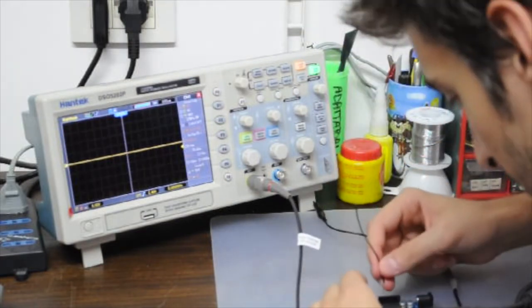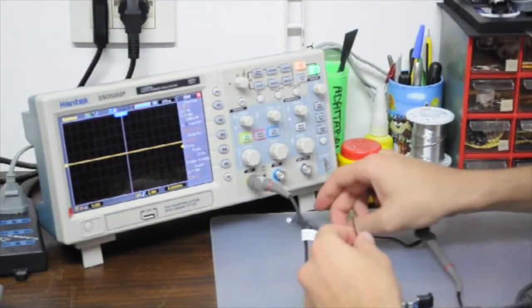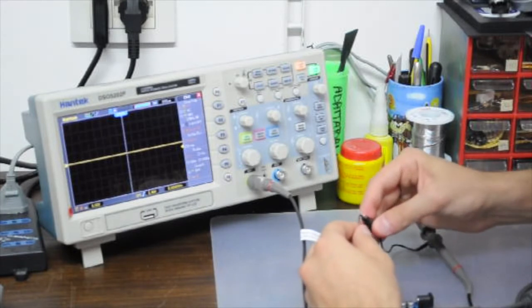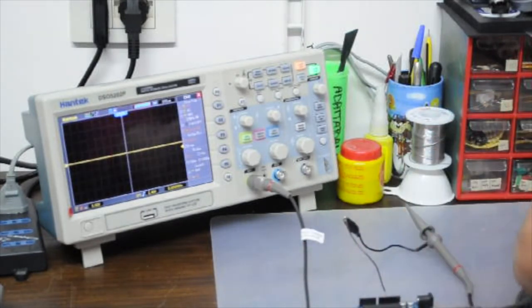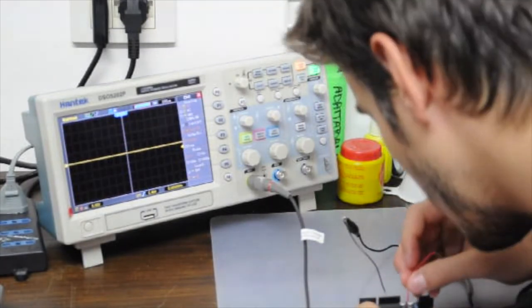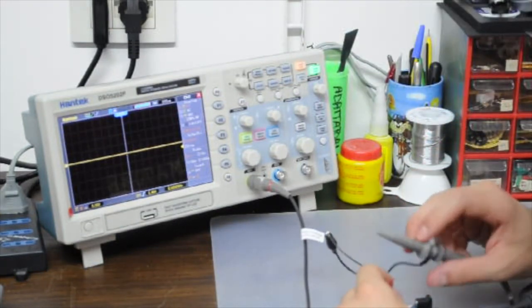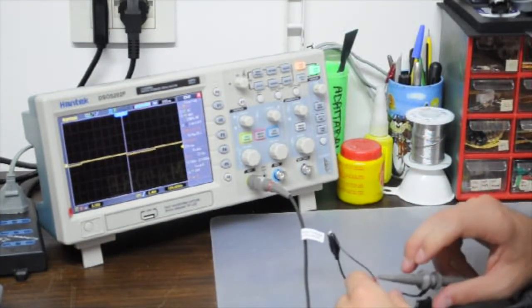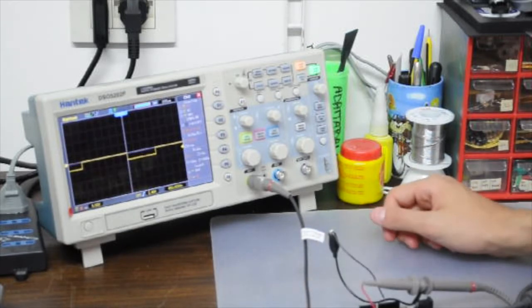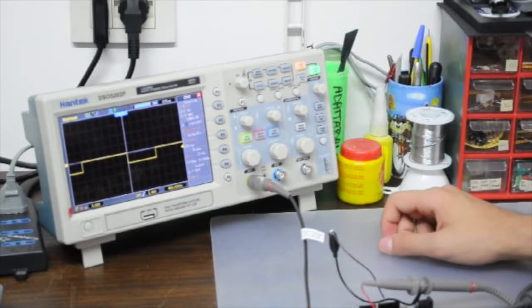And I'm gonna hook up the probe to the Arduino, so I've made the ground here with the alligator clip, and also I've made the light pin because it is obviously a PWM pin.